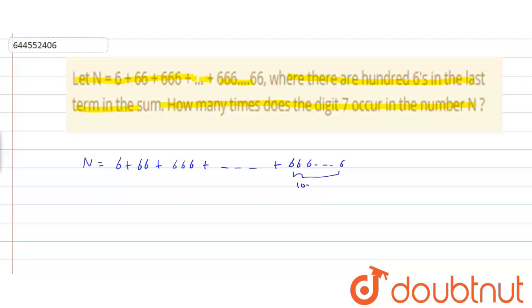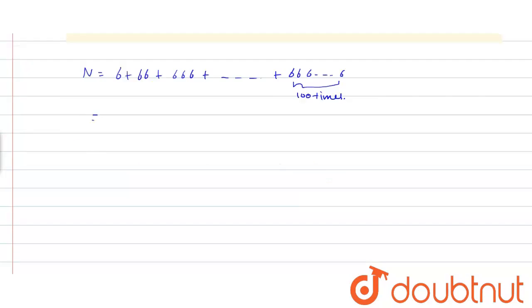100 times. We can write this as (6/9)[(10-1) + (10²-1) + ... + (10¹⁰⁰-1)].